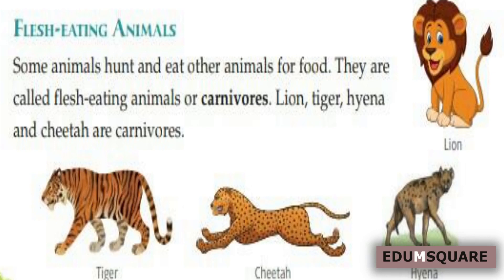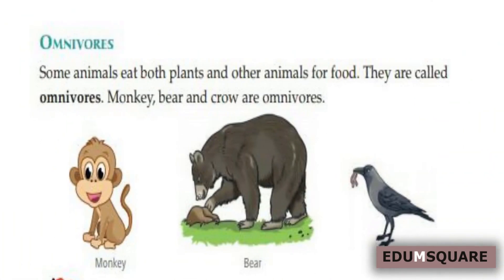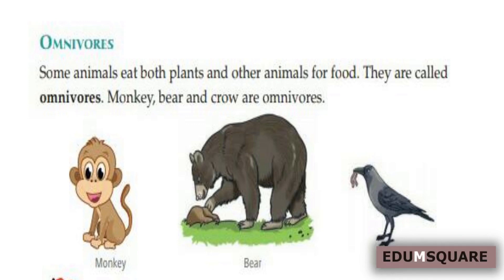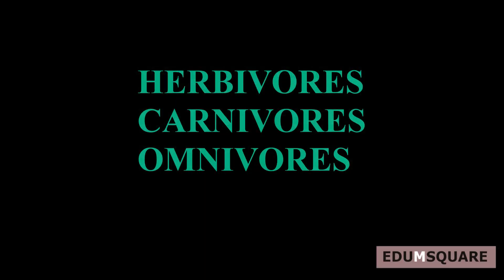The third type is omnivores. Some animals eat both plants and other animals for food. They are called omnivores. Monkey, bear and crow are omnivores. So to summarize, the three types are: plant-eating animals or herbivores, flesh-eating animals or carnivores, and omnivores.